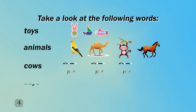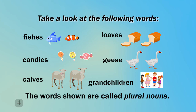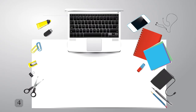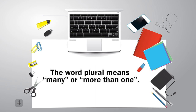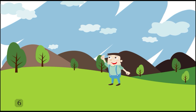Take a look at the following words. The words shown are called plural nouns. The word plural means many or more than one. We make nouns plural by adding S at the end.